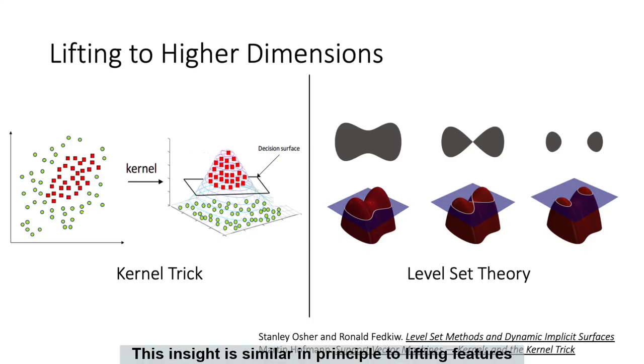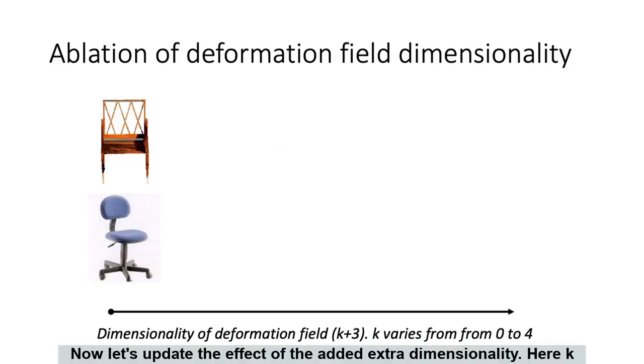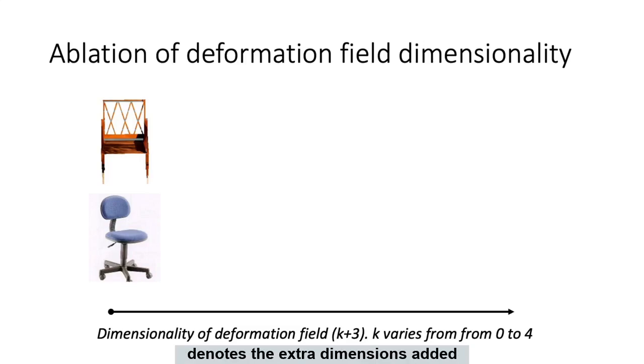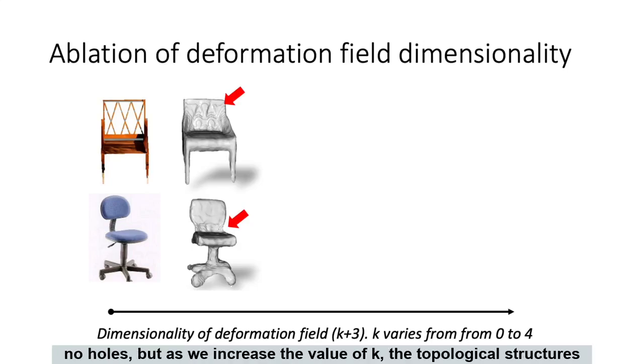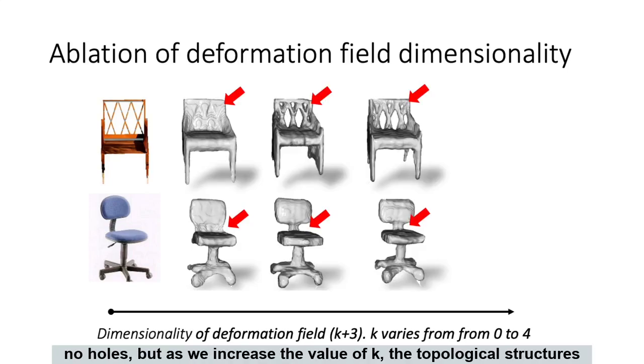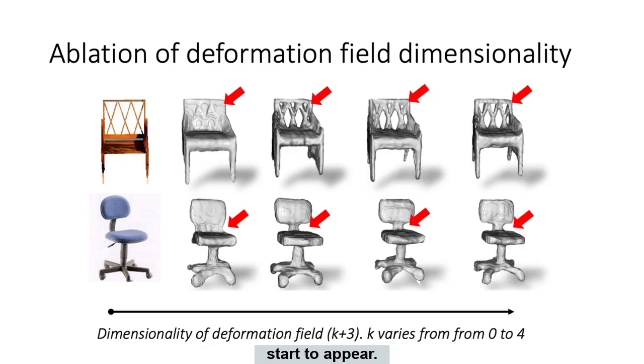This insight is similar in principle to lifting features via the kernel trick in SVMs, or the cutting planes for level-set extraction in the level-set theory. Now let's update the effect of the added extra-dimensionality. Here k denotes the extra dimensions added in terms of the point features. As we notice, k equal to 0 leads to no holes, but as we increase the value of k, the topological structures start to appear.